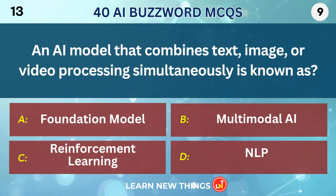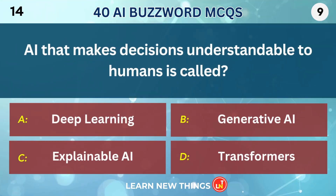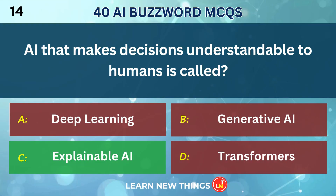An AI model that combines text, image, or video processing simultaneously is known as Multi-modal AI. AI that makes decisions understandable to humans is called Explainable AI.